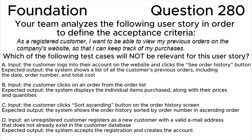Answer B expected output: the system displays the individual items purchased along with their prices and quantities. Answer C — Input: the customer clicks the 'Sort Ascending' button on the order history screen. Expected output: the system shows the order history sorted by order number in ascending order. Answer D — Input: an unregistered customer registers as a new customer with a valid email address that does not already exist in the customer database. Expected output: the system accepts the registration and creates the account.